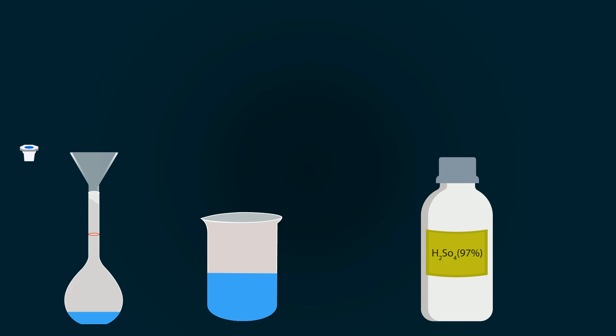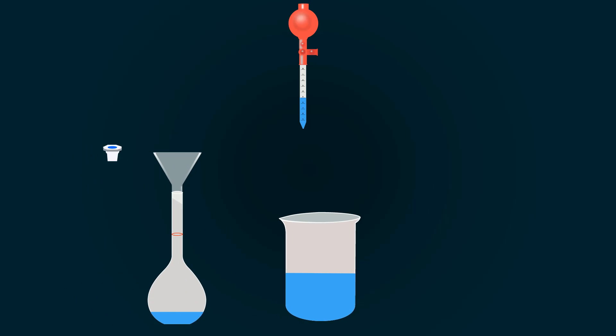Now take the bottle of 97% H₂SO₄, open it up, and pipette it out up to our required volume. Now put this into the measuring flask.